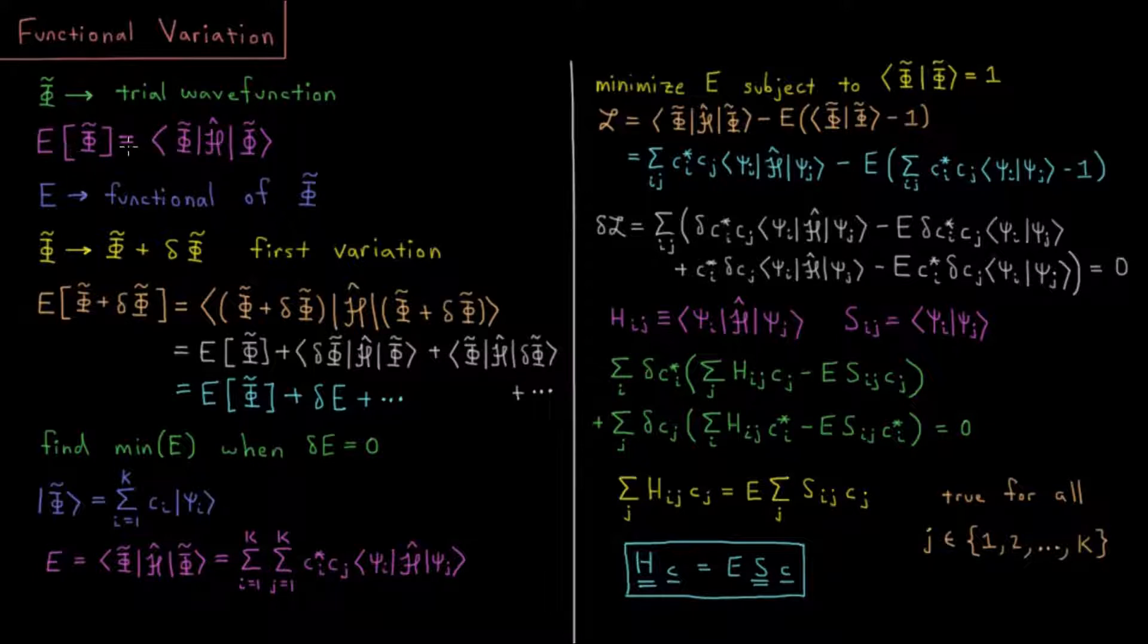That energy equals the following expectation value integral: the complex conjugate of the wave function times the Hamiltonian operator acting on the wave function. That's integrated over all space, all coordinates of all electrons in this case.